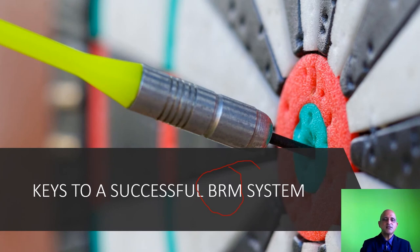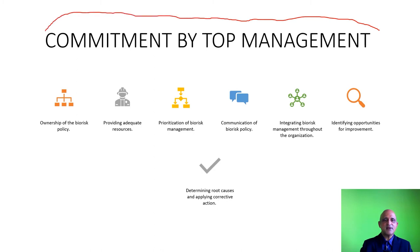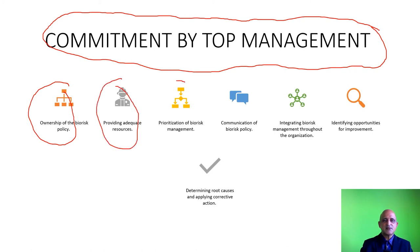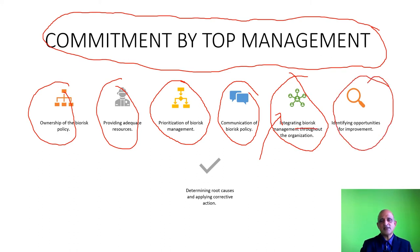What are the keys to a successful Biorisk Management System? The first key is commitment by top management. Top management must take ownership of the system, provide adequate resources, give safety a priority over science, communicate the Biorisk Policy across the organization, integrate Biorisk Management throughout the organization, identify opportunities for improvement, and define the root cause and apply corrective action.